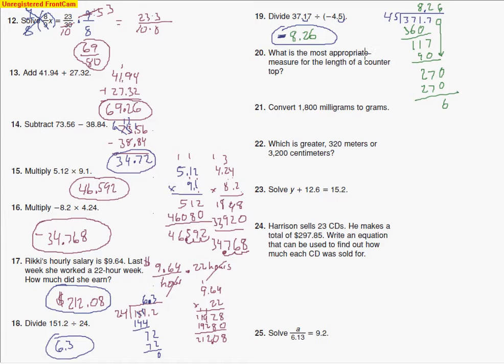What is the most appropriate measure for the length of a counter? Well, remember we have a few different types. We have that millimeter, which is about the thickness of a dime. We had a centimeter, which is about the thickness of your little finger. And then you had a meter, which was the thickness of a door, the distance between the ends of the door.